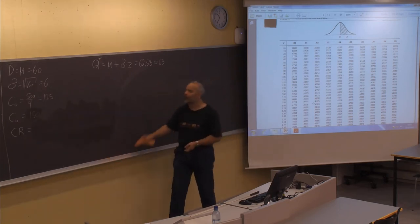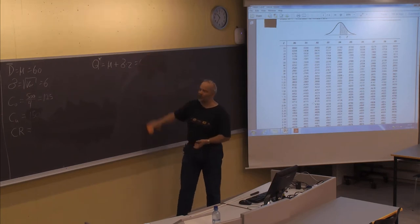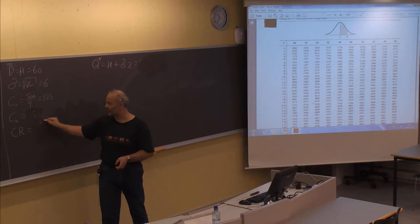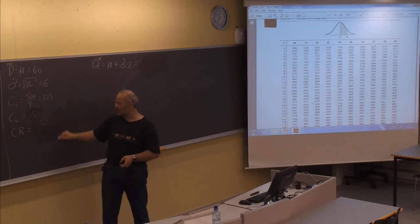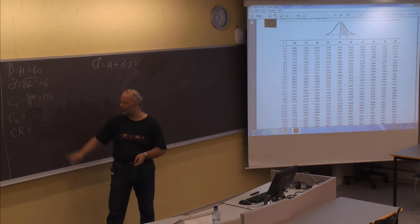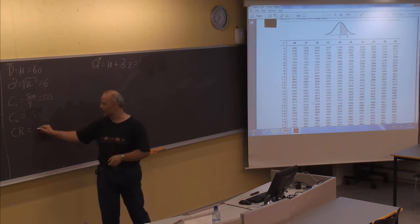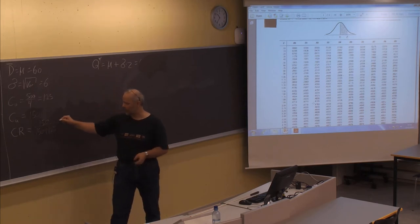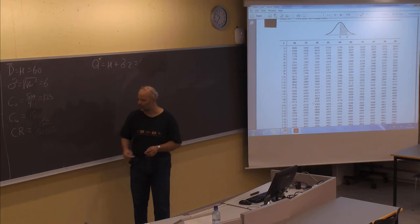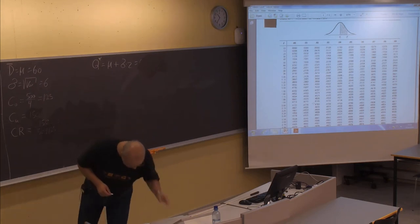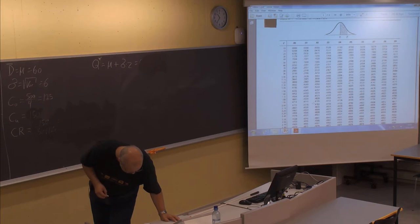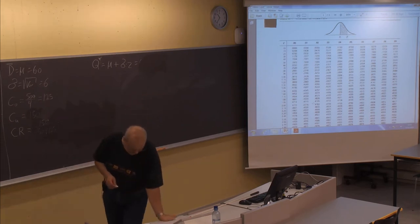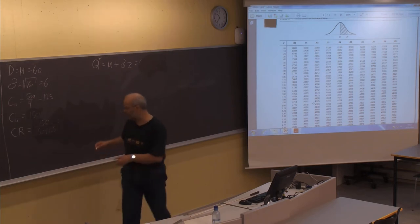The critical ratio is found in the same way: underage cost 150 divided by the sum of underage and overage costs, 150 plus 125, giving 150 divided by 275, which equals 0.5455.